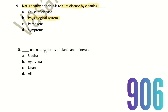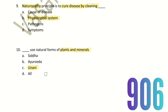Tenth question: Which system uses natural forms of plants and minerals? You can use natural plants or minerals in medicine. The choices are Siddha, Ayurveda, Unani, and all. In Unani, plants and minerals are used for disease treatment. Hence, the right answer is Unani.